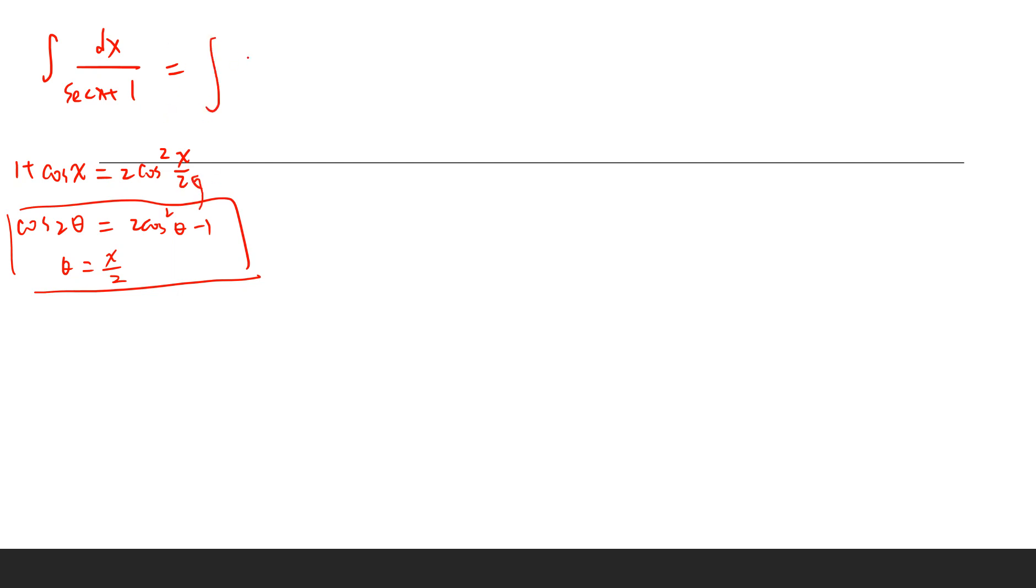So this can be written as cosine x dx over one plus cosine x, because secant you can write as one over cosine x. So we can write it as cosine x dx divided by this.